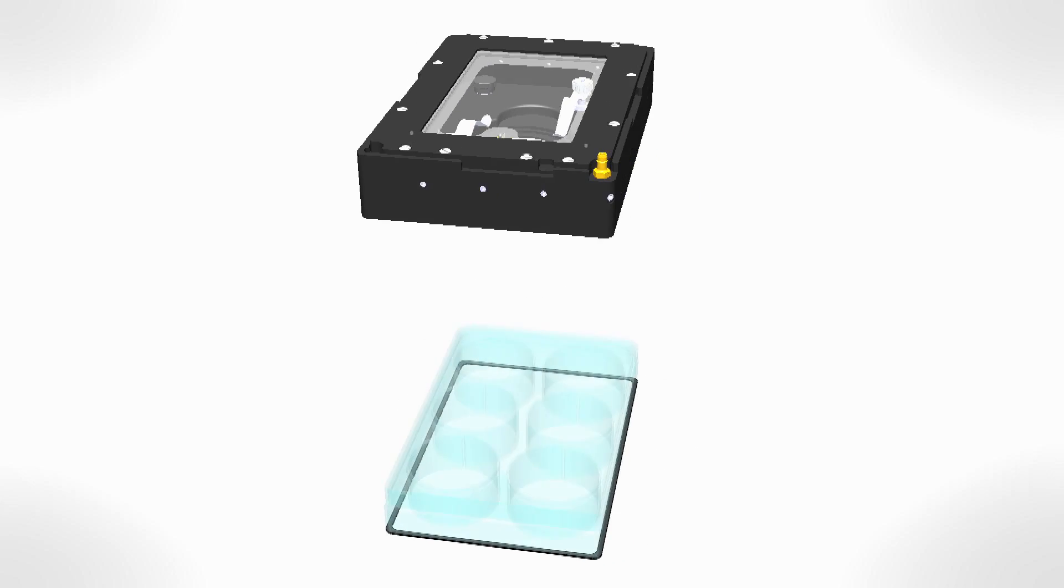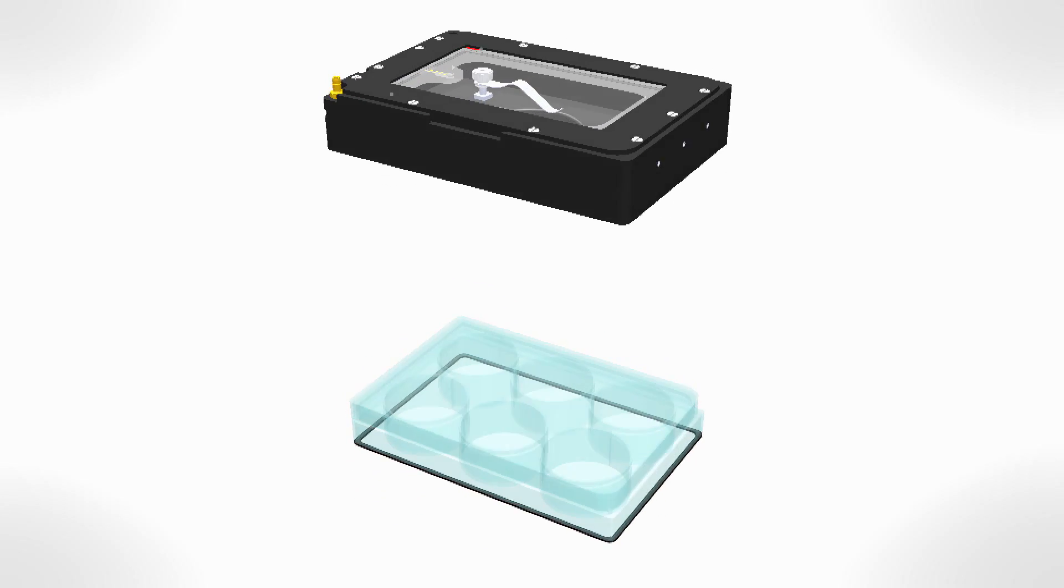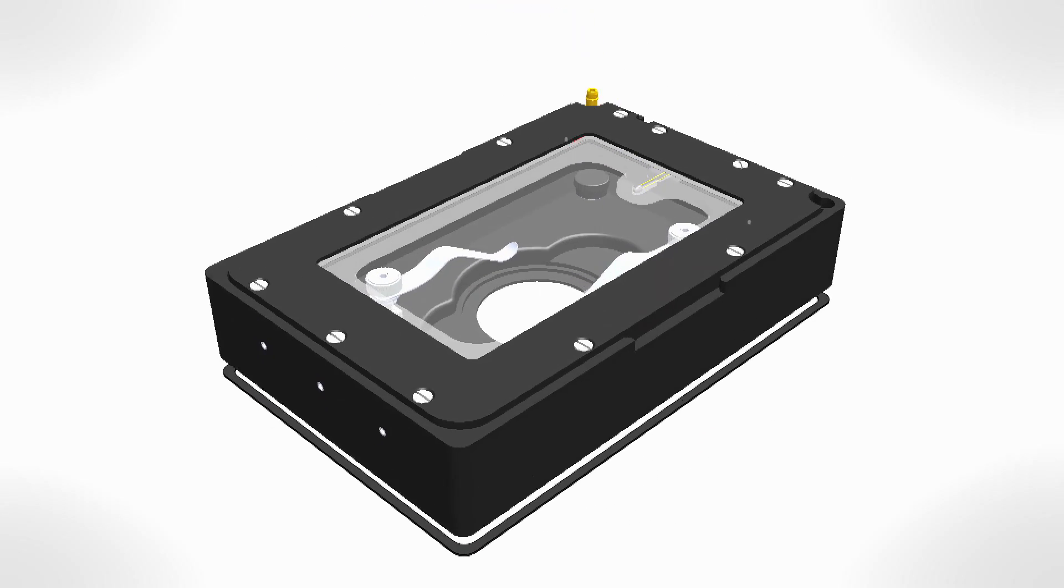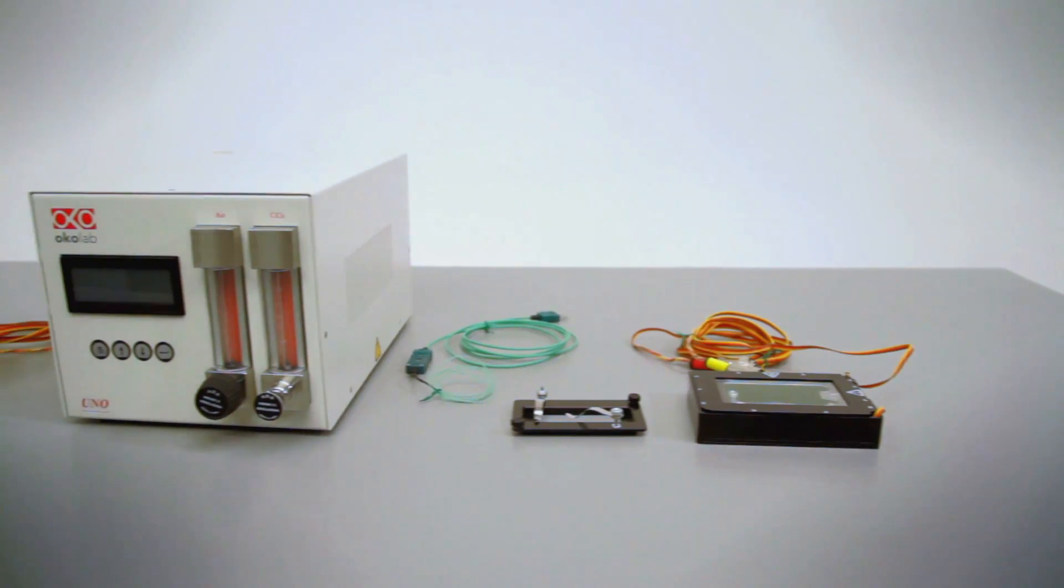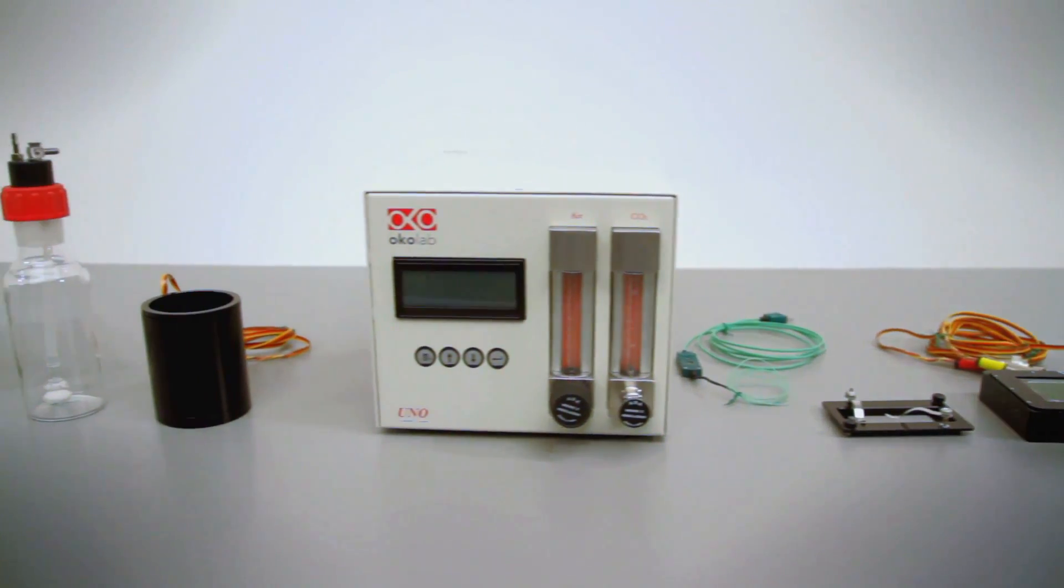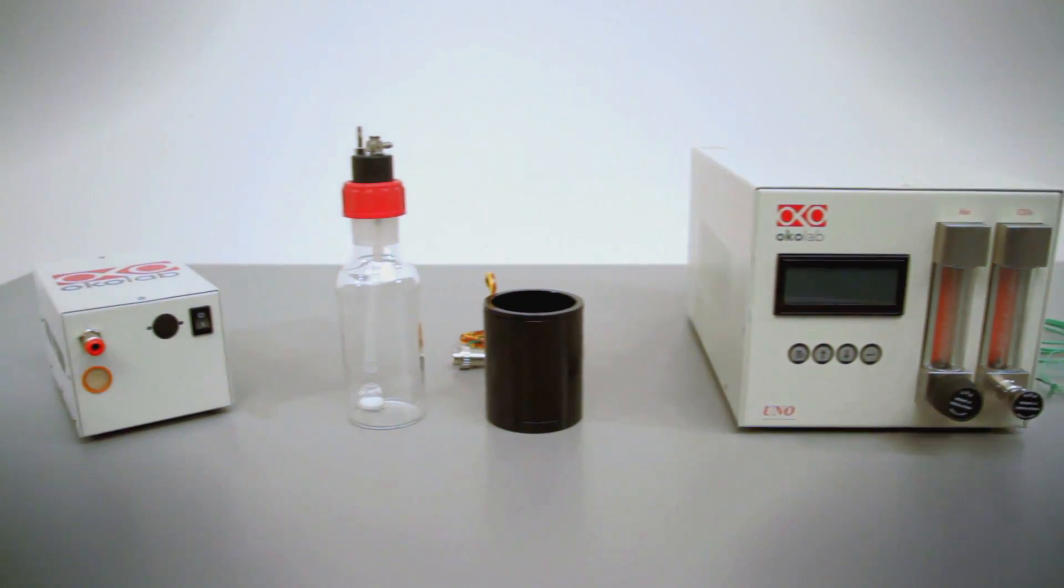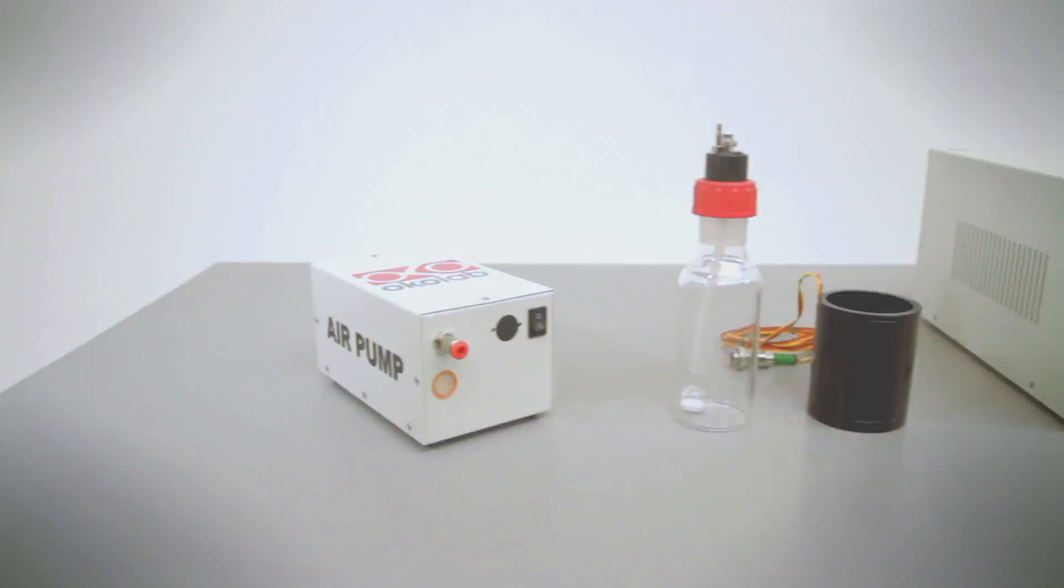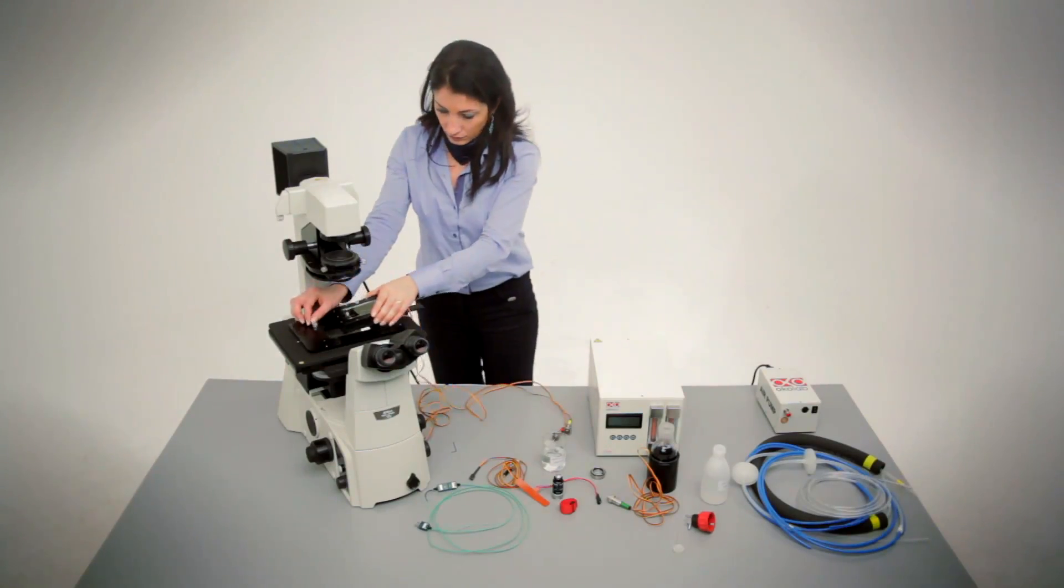UNO is a single specimen top stage incubator with the footprint of a multi-well plate. It creates a small environment right on the microscope stage at controlled temperature, humidity and carbon dioxide concentration.